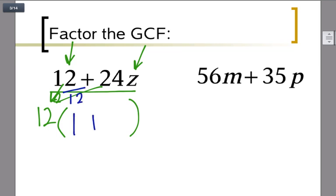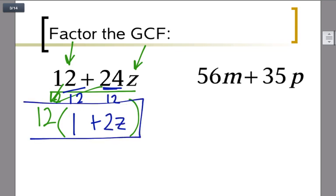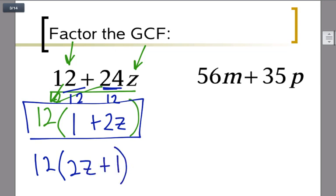Then plus 24 divided by 12 is 2z. This could be your answer, but it feels a bit awkward. Usually we prefer descending order, so I'd write 12 times (2z plus 1). We generally don't like variables in the back, but if the problem is given that way, that form of the answer is acceptable.